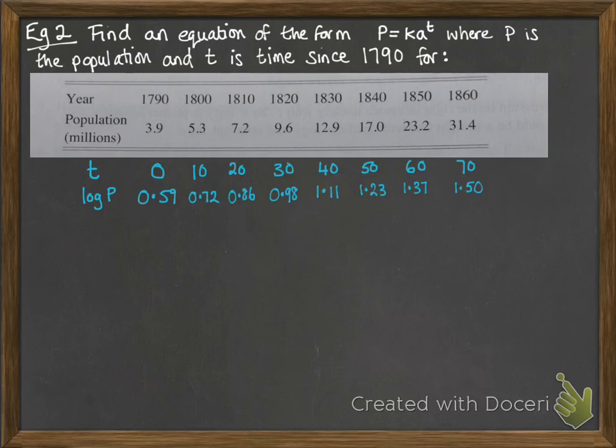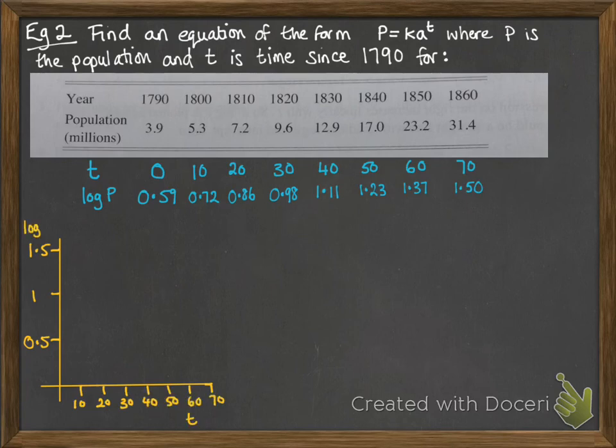Just taking log of each of those values and then plot them on a graph. We can see that it makes roughly a straight line, and we're going to find the equation of that line to help us find the overall equation.